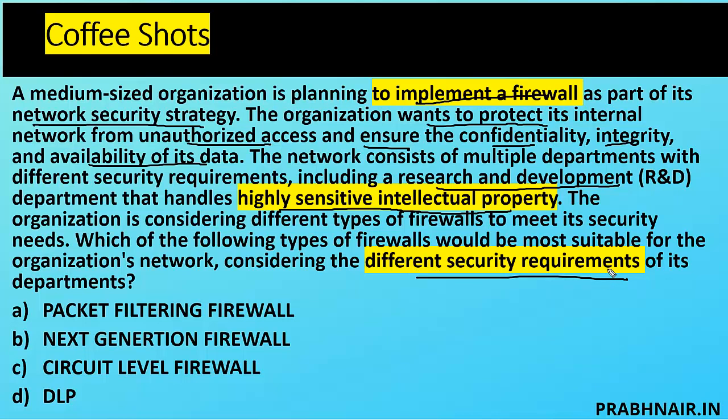The keywords are: firewall, CIA, protecting sensitive data, and different security requirements per department. A packet filtering firewall works only at Layer 3, inspecting source/destination IP and ports, but it cannot do content inspection or session state inspection. A next-generation firewall (NGFW) works from Layer 3 to Layer 7 of the OSI model, combining traditional firewall capabilities with advanced features like application control, intrusion prevention, and SSL inspection.